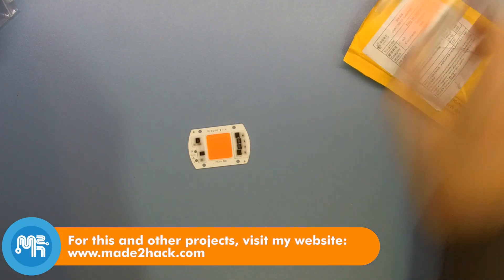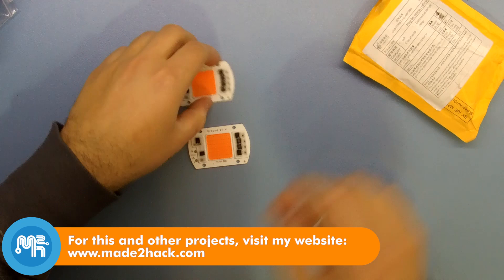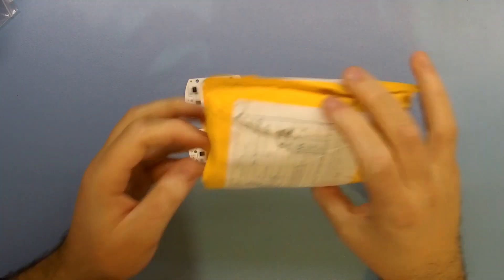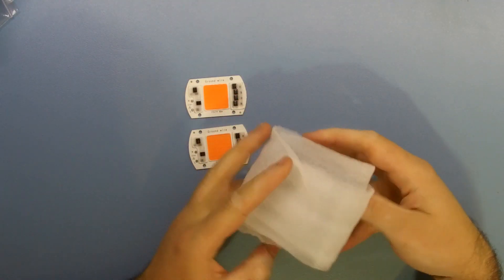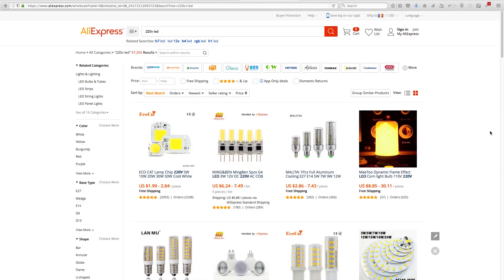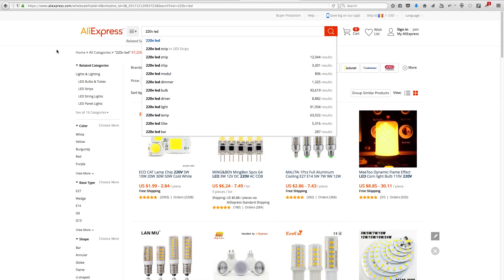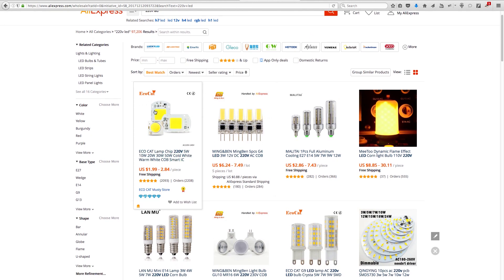I recently bought these full spectrum LED cobs that work directly from 220V mains electricity. You can find them on AliExpress or Ebay by searching 220V LED or 110V LED.